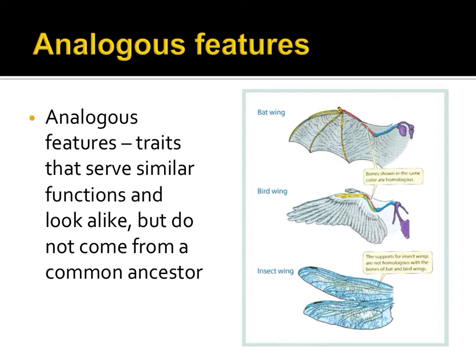Analogous features serve similar functions but are structurally different. Bats, birds, and insects all have wings that are used for flying, but they are very differently structured. Evolution explains that these traits were adapted separately but for similar purposes. Organisms that share analogous structures are often very unrelated to one another genetically, even though they might look the same.